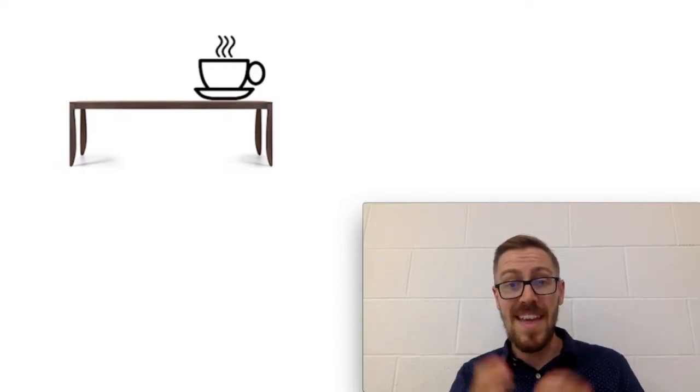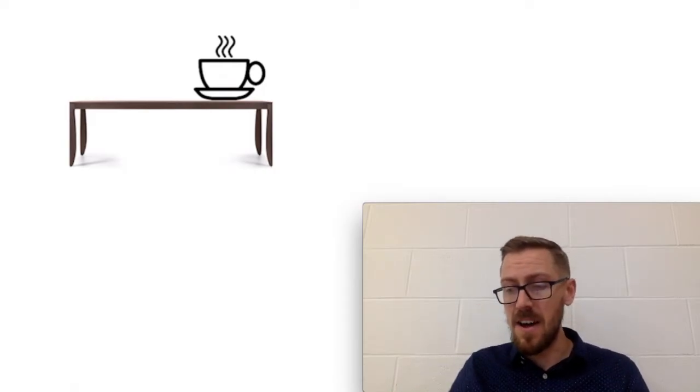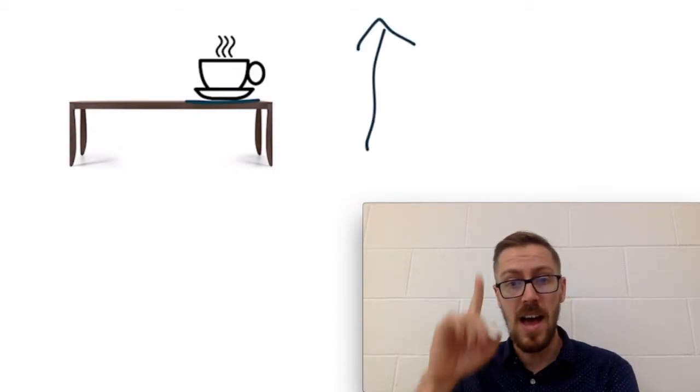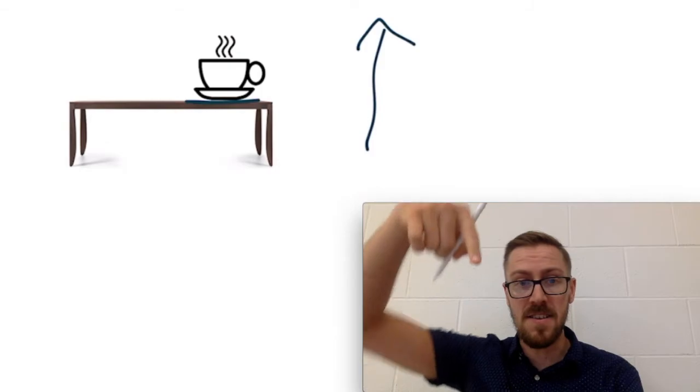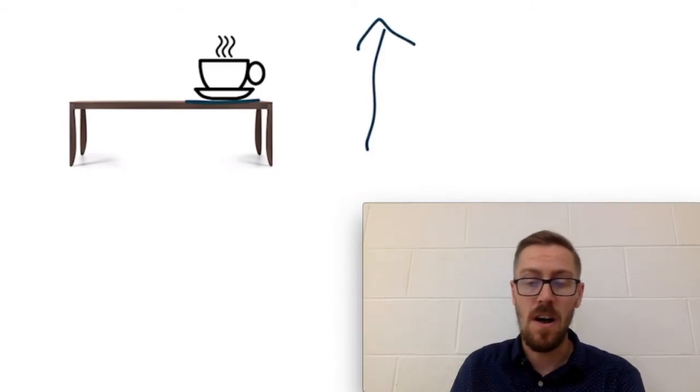So I have some examples for you today. So here we have a coffee cup sitting on a table. And the question would be is there a normal force here? And the answer is yes because it's sitting on a surface right here. There's a force that's pushing up on the coffee cup and that's called the normal force. So in this case the normal force would be upward because the cup is pushing down on the surface.